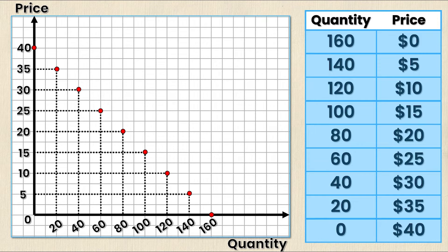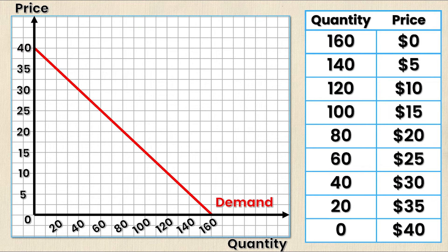What you might notice is that these points seem pretty linear, and that makes sense because in this case we have a linear demand curve. For the final and arguably the easiest step, I'm going to connect all of these points and that's going to give me my demand curve. I can clean up the graph by taking out all of those dashed lines, and what I'll be left with is simply a demand curve with an intercept point at price equals $40 and quantity equals 160.